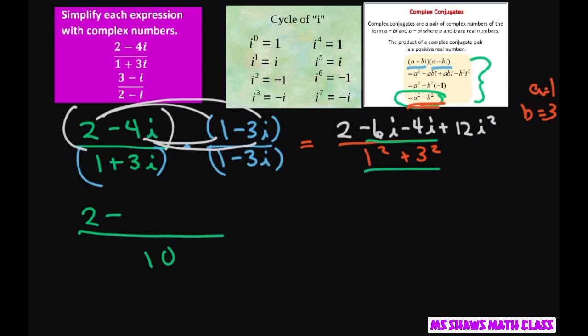Okay, minus 10i plus 12, and remember i squared is negative 1, so multiply that by negative 1.